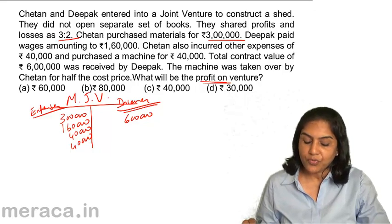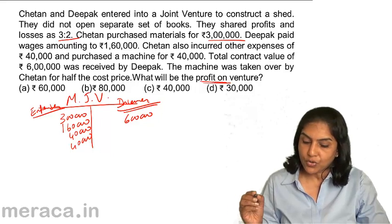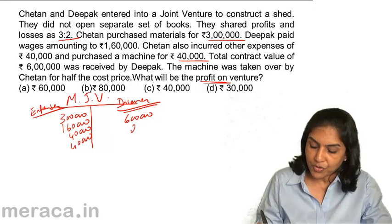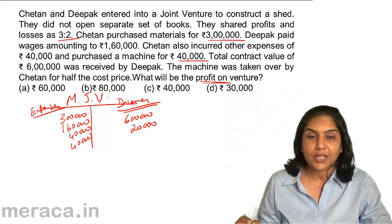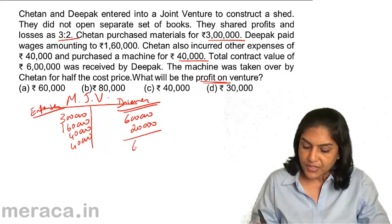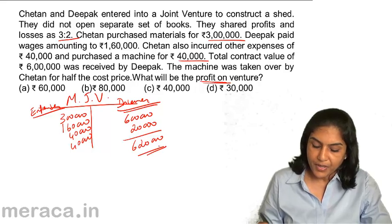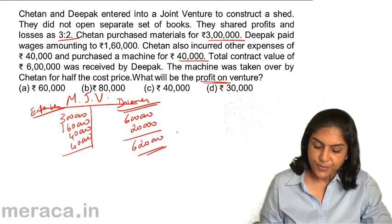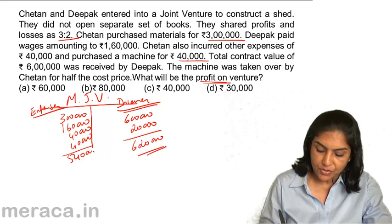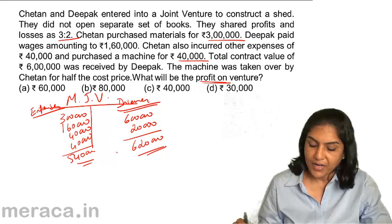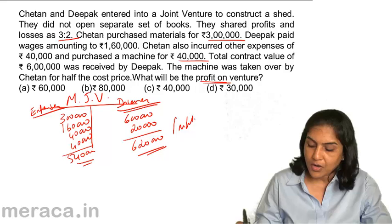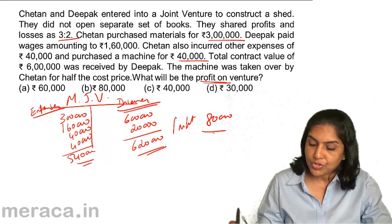The machine was taken over by Chetan for half the cost price. The cost price was ₹40,000, so it was taken over for ₹20,000. So, what do we have now? Income side: ₹6,20,000. Expenses: ₹3 lakh, ₹4,60,000, ₹5 lakh, ₹5,40,000. Therefore, expenses of ₹5,40,000 against income of ₹6,20,000 gives a profit of ₹80,000.